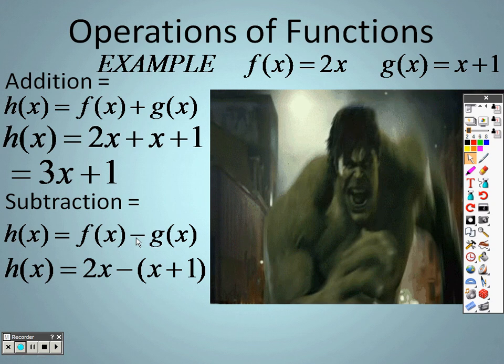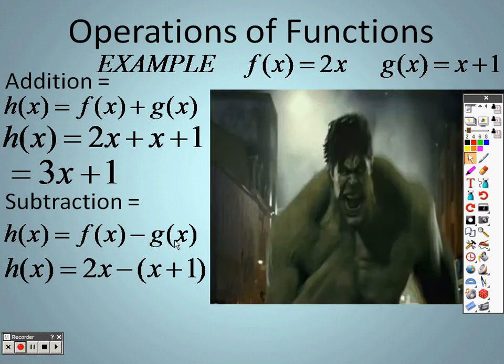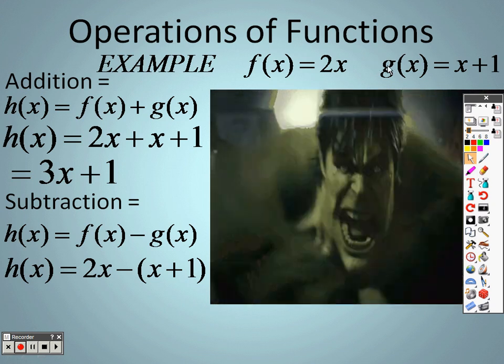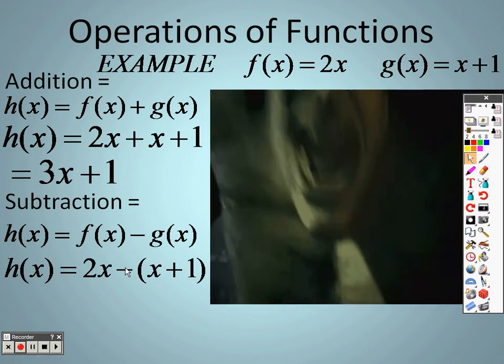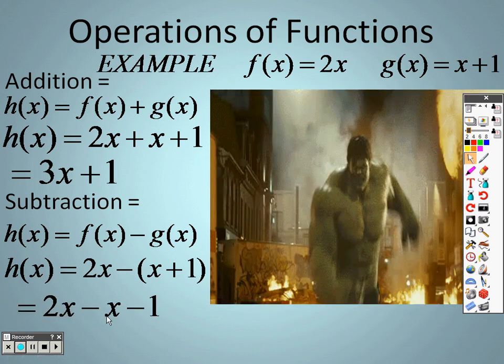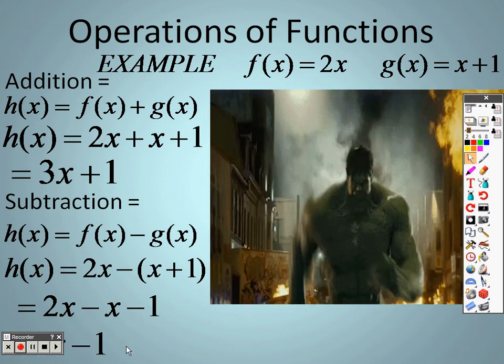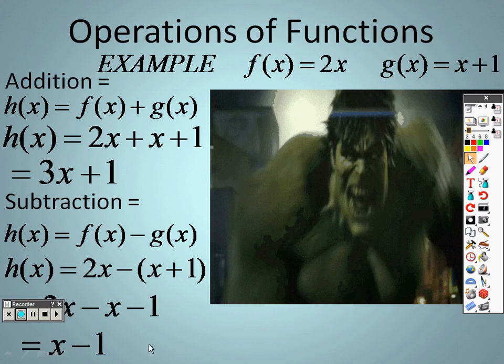But here's the catch. It's minus all of g of x, minus everything that is in g of x. So minus x plus 1 is really all I'm doing there. So I distribute that through to both items. x plus negative x negative 1. And now I can combine my like terms. 2x minus x is x. And we have x minus 1 as our answer.